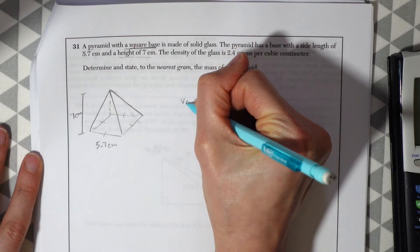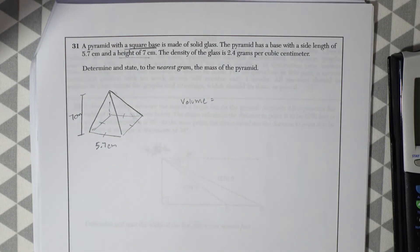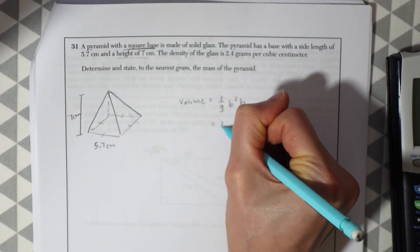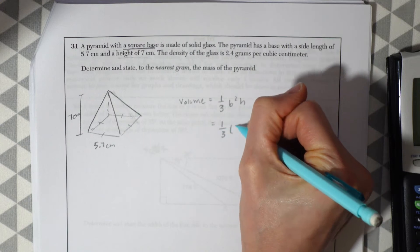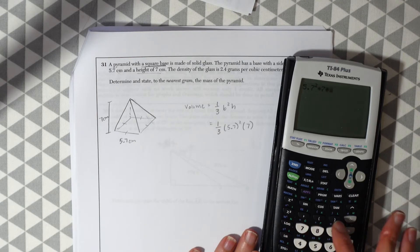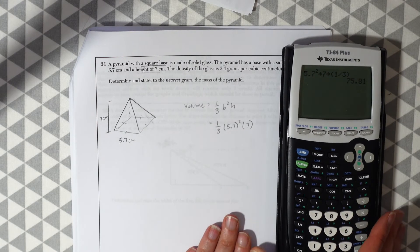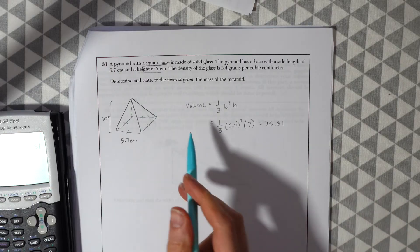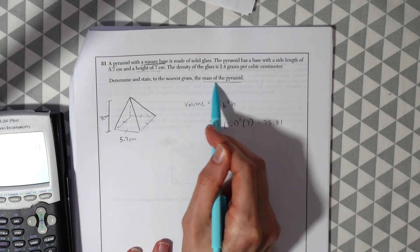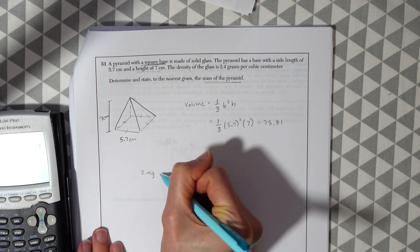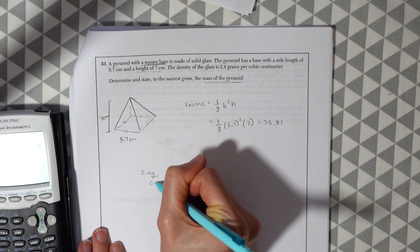They give us the side length which is 5.7 centimeters and they also give us the height which is 7 centimeters. It gives us the density of the glass and they want us to find the mass of the pyramid. So the first thing we're going to want to do here is to find the volume of the pyramid and when dealing with volume of a square base pyramid we're just going to use the formula one third base squared times height. So this will be one third and the base is 5.7 squared times the height which is 7. Plug that in and we get 75.81. Okay but we're not done here. They're not asking for the volume. They want to know the mass of the pyramid and they gave us the density of the glass. So they gave us this here. Density of the glass is 2.4 grams per cubic centimeter.